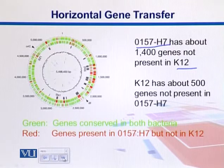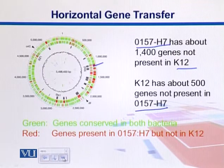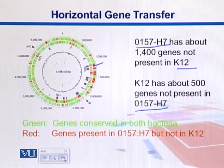Similarly, there are 500 genes in K12 which are not present in H7. In this circular arrangement, the red color indicates genes present in H7 but not in K12, and greens are the ones which are conserved in both organisms.